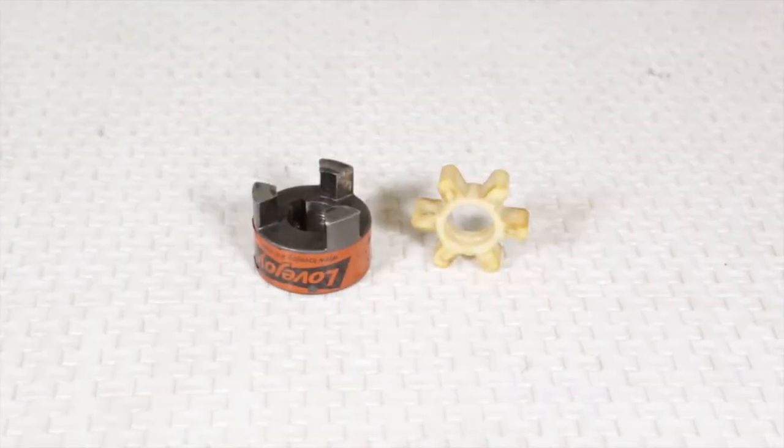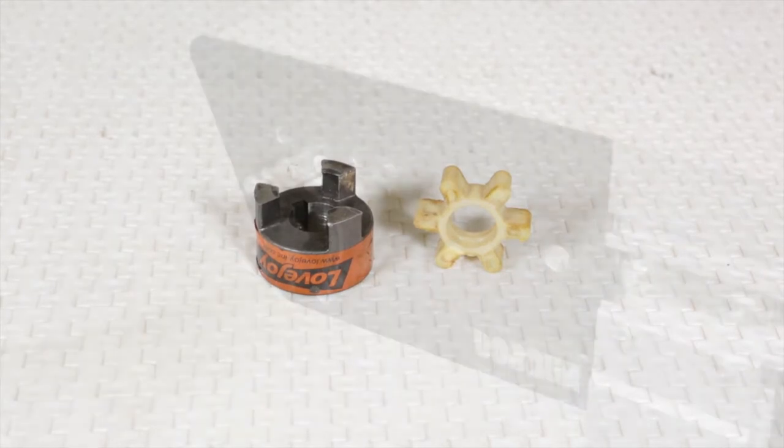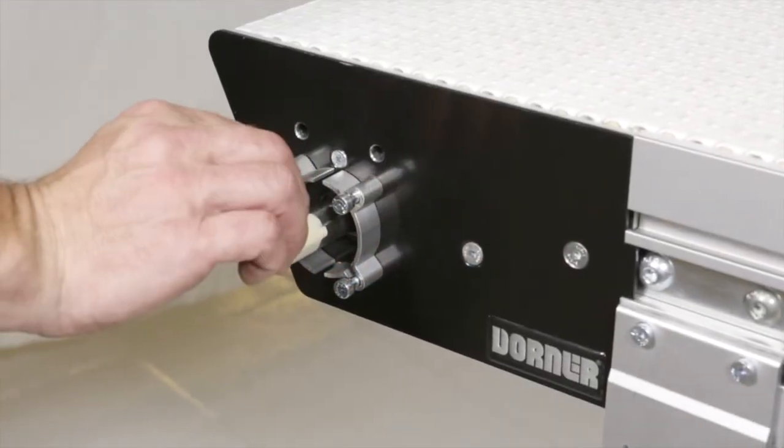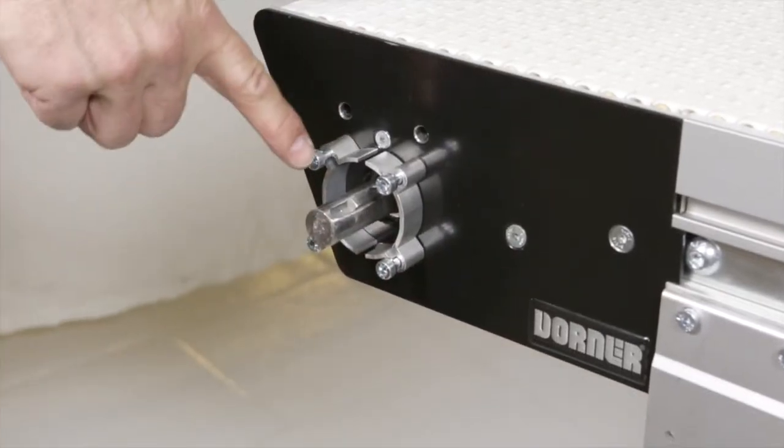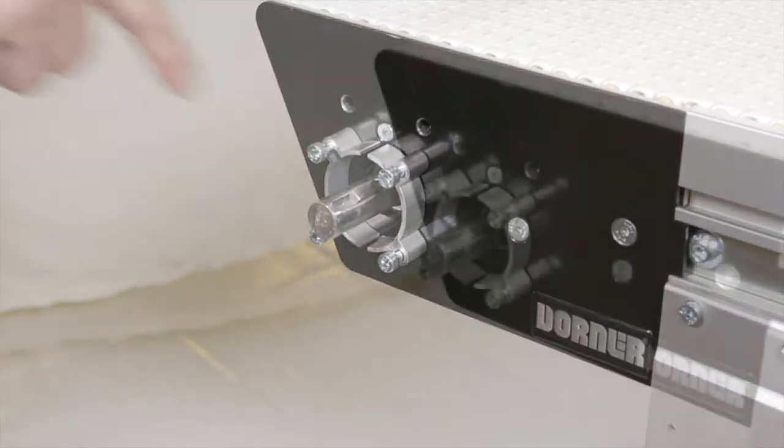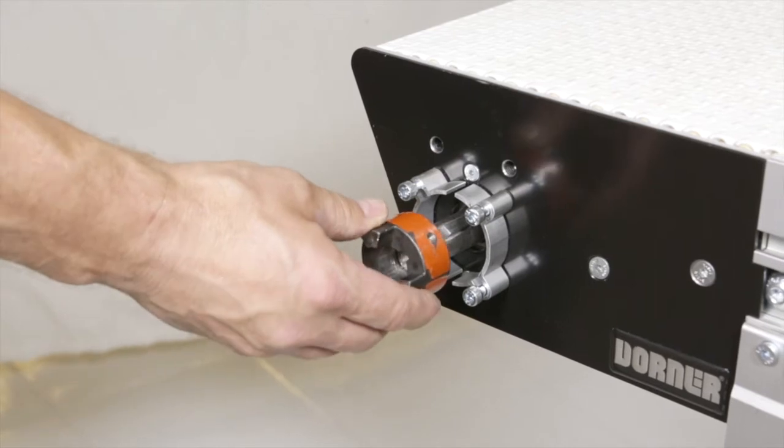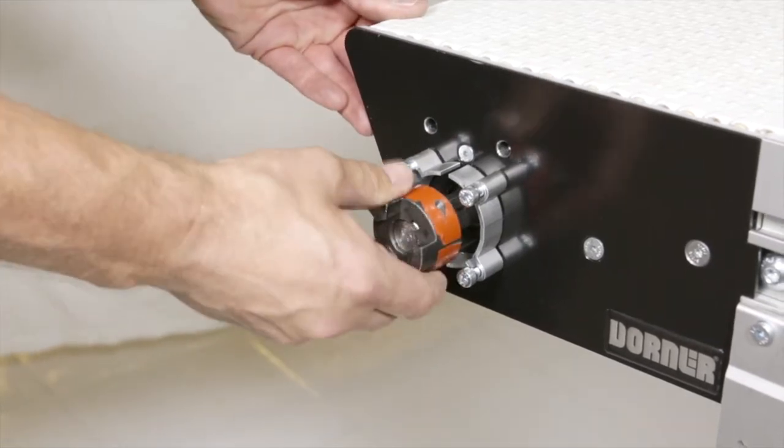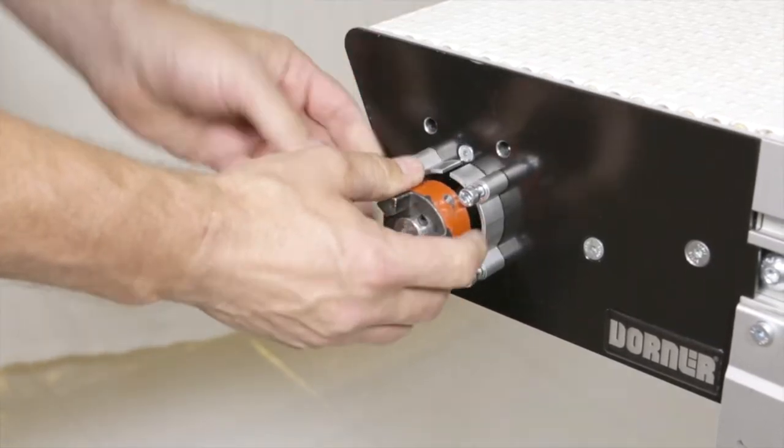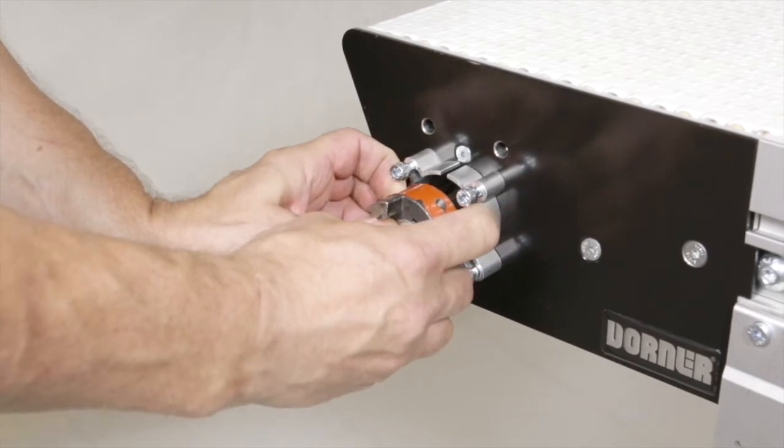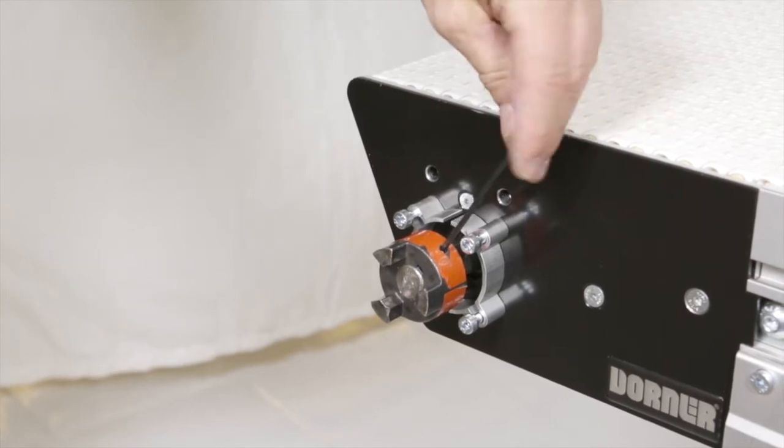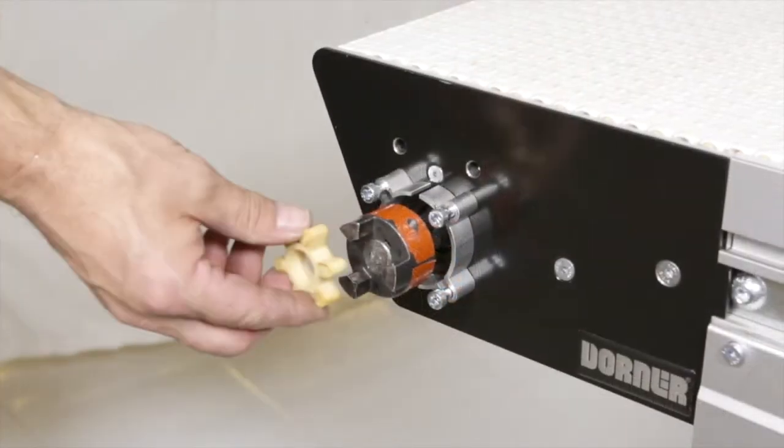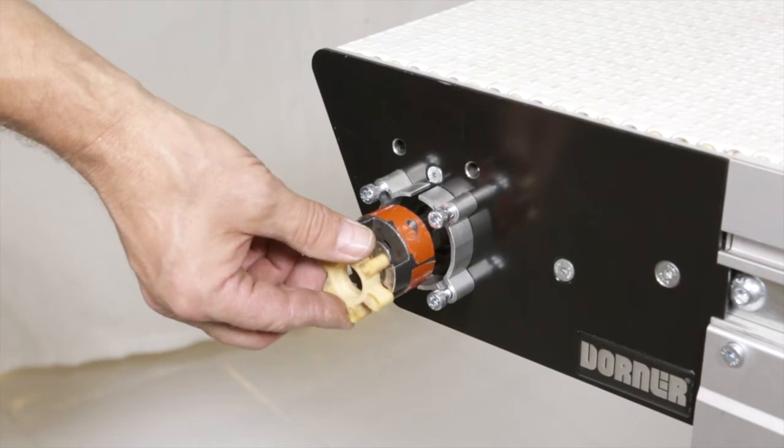Locate the coupling half and spider bushing. Remove the tape from the output shaft if needed, and ensure the key is in place. Place the coupling so that it's flush with the end of the shaft. Then tighten the set screw on top of the key. Install the spider bushing in the jaw coupling.